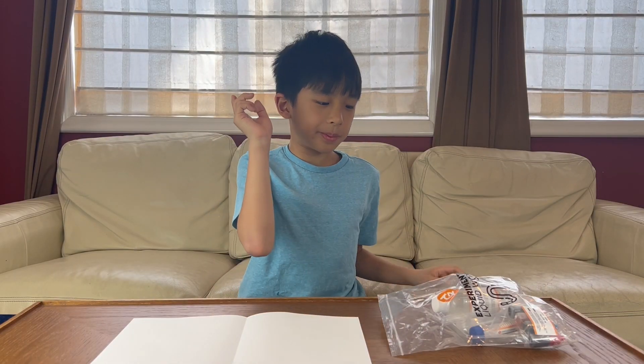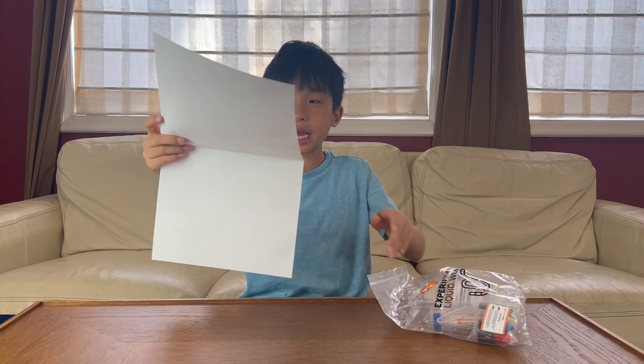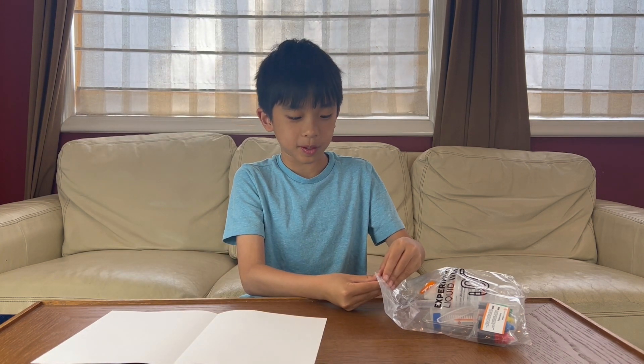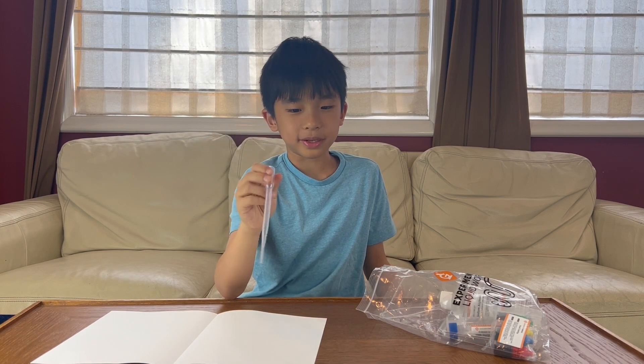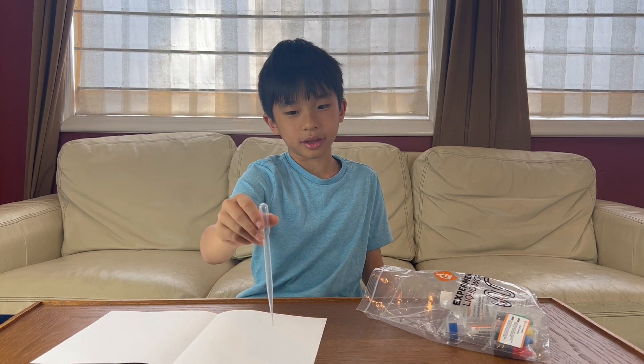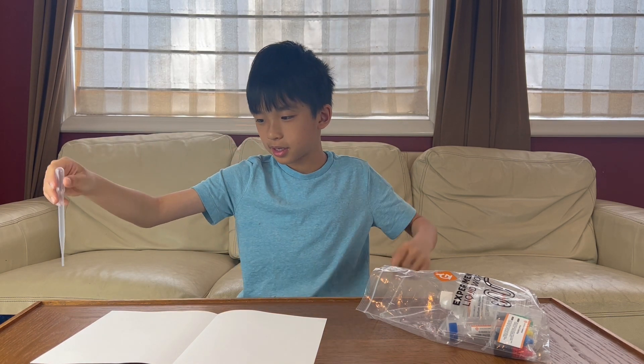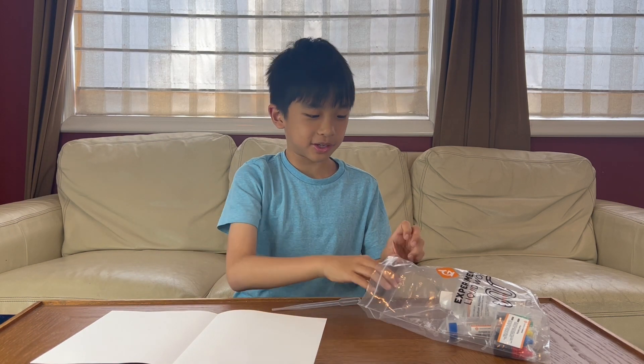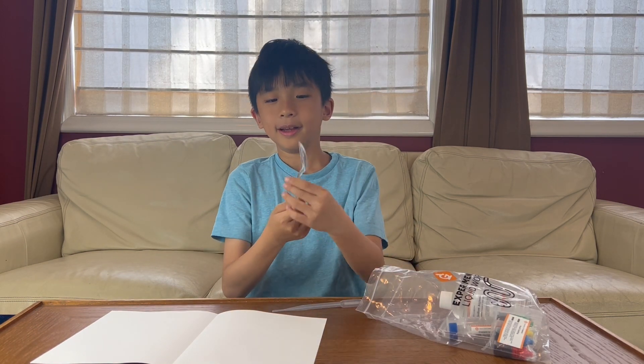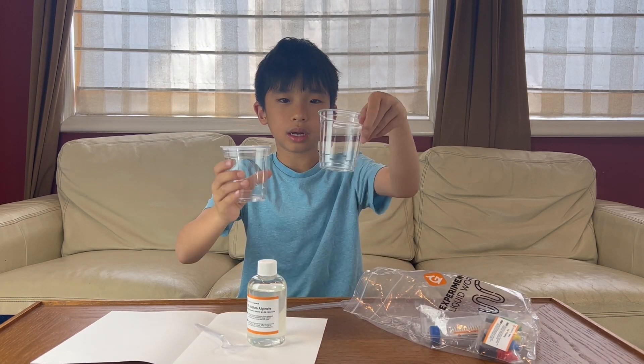First, we're going to unpack experiment one. Also at the bottom of the box, they have this paper called Unrippable Paper. So after we're done with every experiment, I'm going to try ripping that up. So over here is called a pipette, but it's the thing where you put it in some kind of liquid. You press, it'll suck it up, and then un-press, bring it somewhere else, press. The liquid just went to a different place.